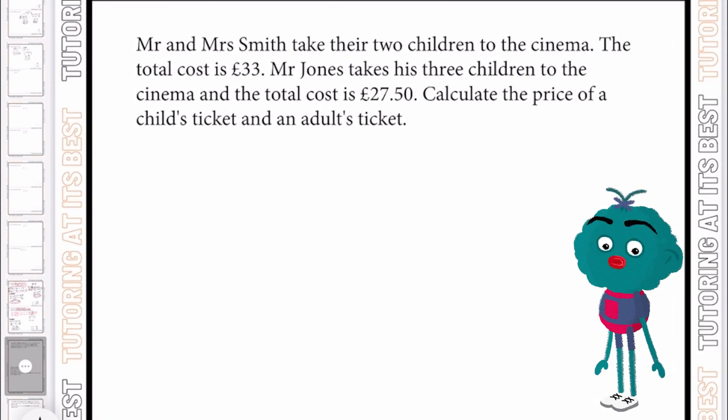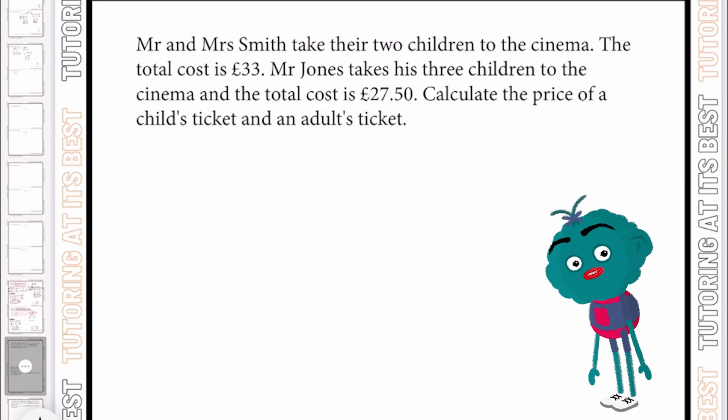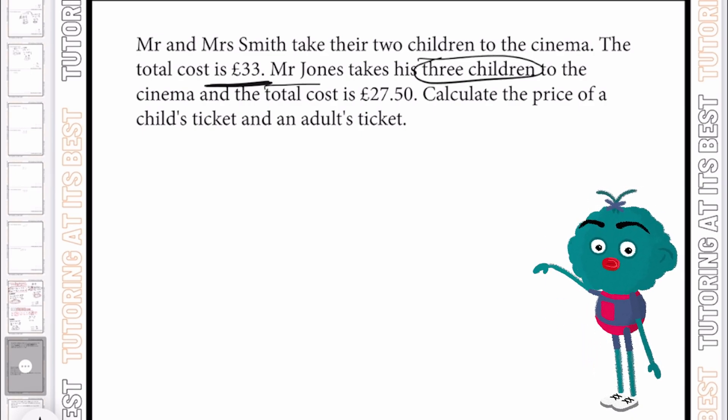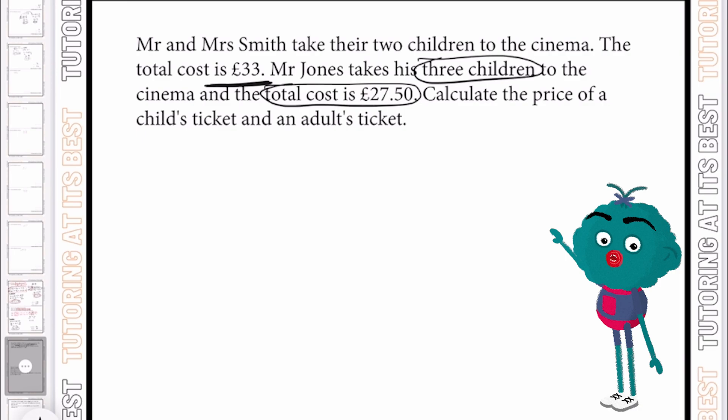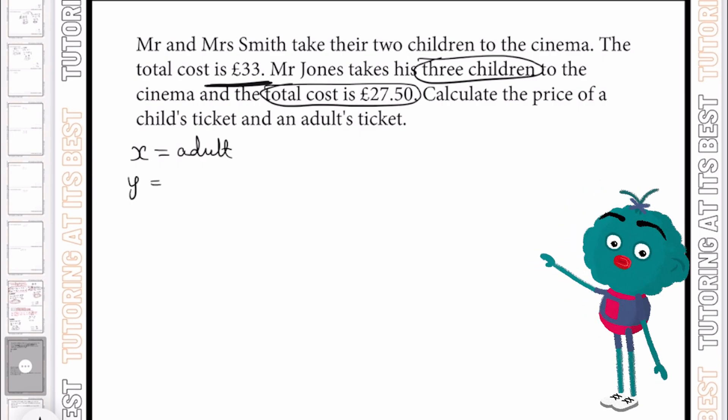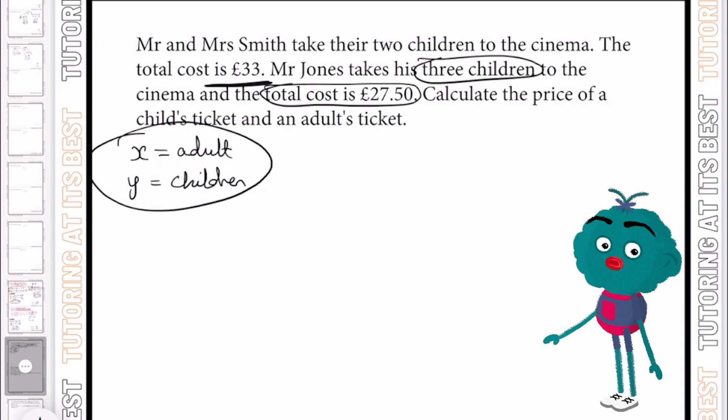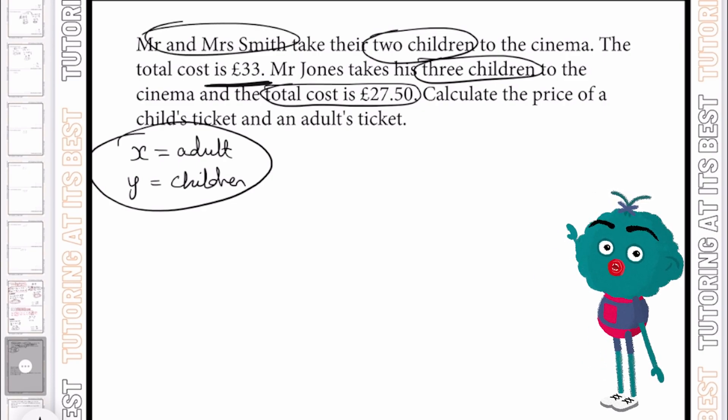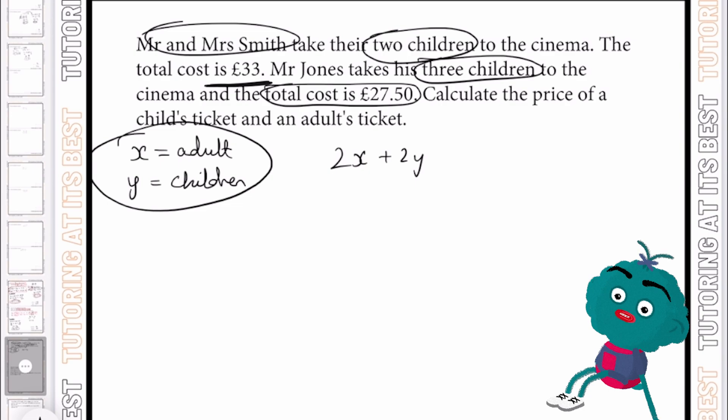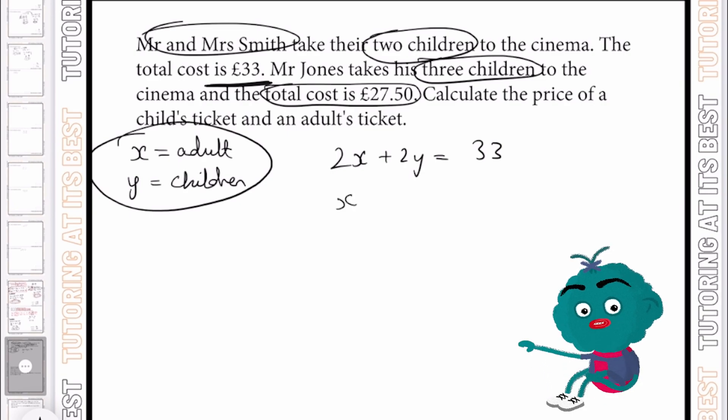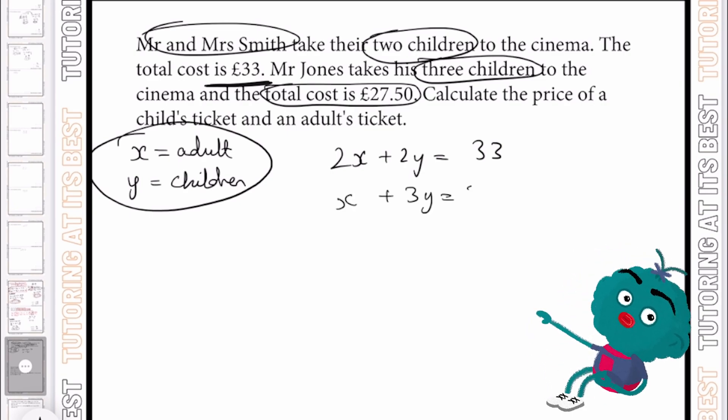So Mr. and Mrs. Smith take their two children to the cinema and the total cost here is £33. And Mr. Jones takes his three children and the total cost is £27.50. Let's say x is going to be the cost of an adult ticket. So x equals adults. We'll have a key here and y will equal children. As you can see, Mr. Smith is taking his two children and him and his wife. So let's say 2x plus 2y, which equals £33. And Mr. Jones, who takes himself and his three children, we're going to have x plus 3y, which equals £27.50.